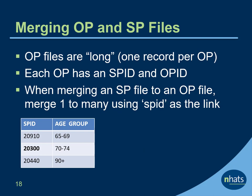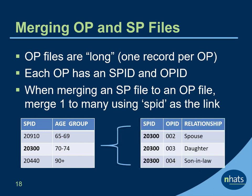The OP file is organized in a long format with one record for each OP. Each OP record has the ID of the SP and the ID of the OP. To merge an SP file with an OP file, be sure to merge one record in the SP file to many records in the OP file using SP ID.